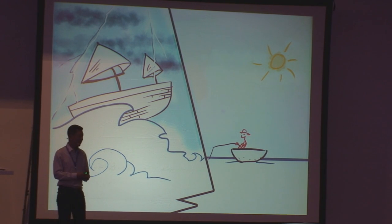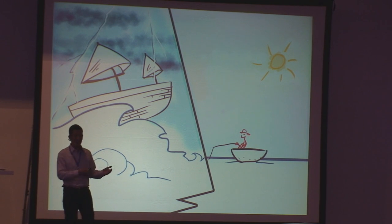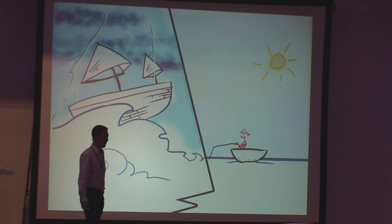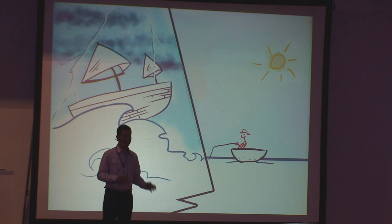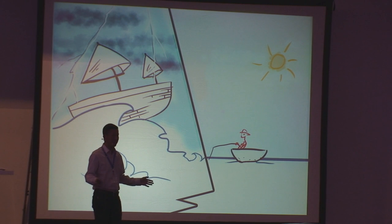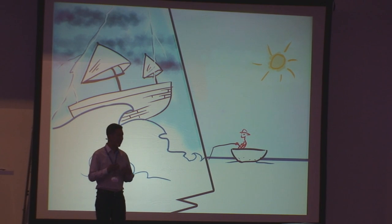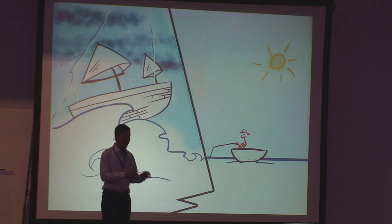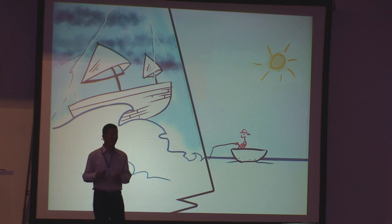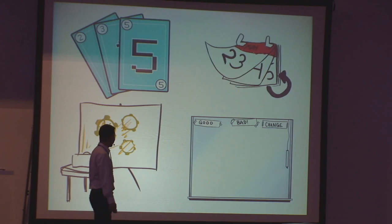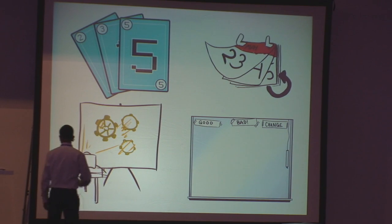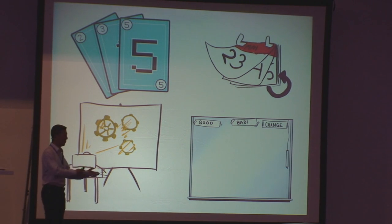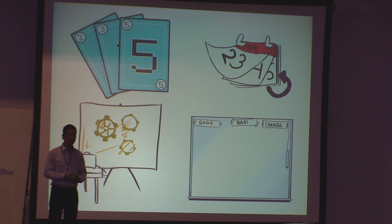The entire move to Agile Scrum was precipitated by development needs with absolutely no regard for how it would affect security — and that's the right choice. You don't make development decisions based purely on security. But it was done without regard for security, so it was incumbent upon us as the security team to be aware of what was happening and adapt to how the business now wanted to develop software.